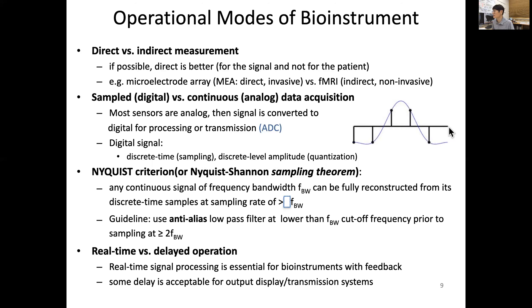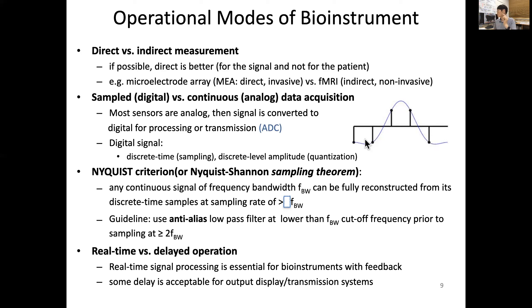On the x-axis is time, and the purple line represents what we assume is the true analog signal. However, we cannot capture the whole signal continuously, so we sample it. The vertical lines indicate the regular time intervals at which we are sampling, and we record the values shown by the black dots — those are the data points we are actually measuring.